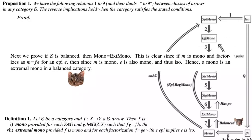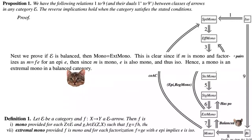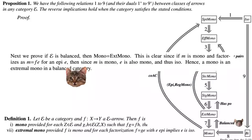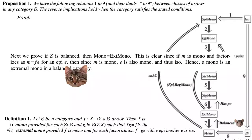Now let's show the upward conditional arrows. First, let E be balanced; then Mono = ExtremalMono. This is clear: if M is mono and M = FE for an epi E, then since M is mono, E is also mono, and since the category is balanced, E must be iso. Hence every mono is an extremal mono in a balanced category.